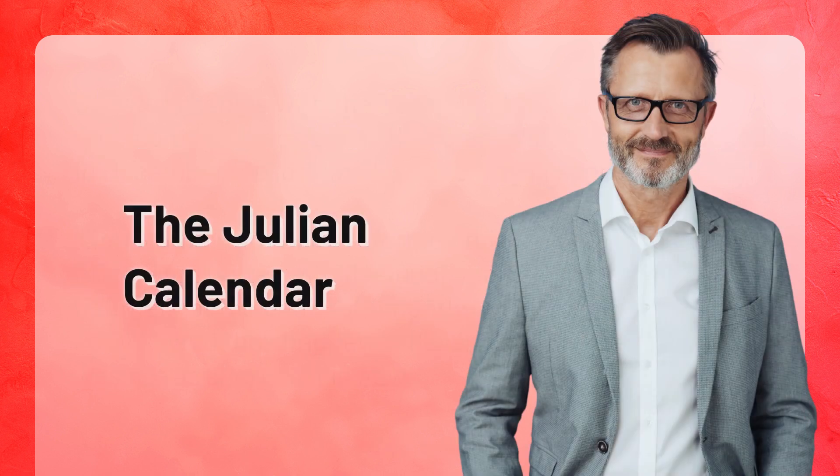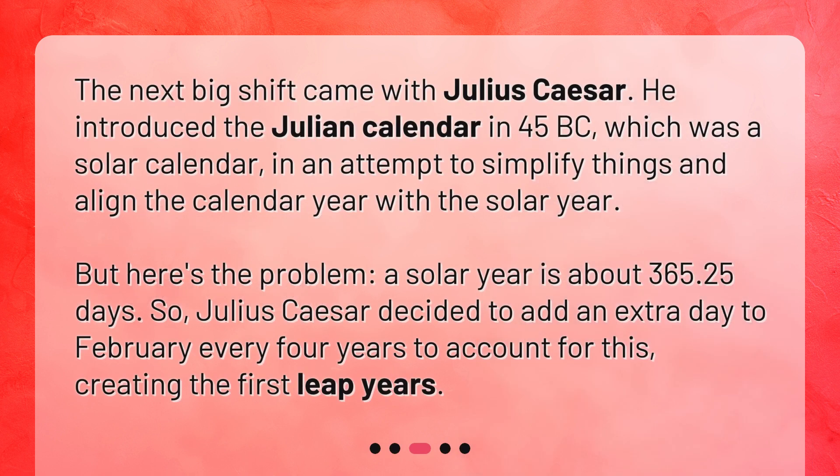The Julian calendar. The next big shift came with Julius Caesar. He introduced the Julian calendar in 45 BC, which was a solar calendar, in an attempt to simplify things and align the calendar year with the solar year. But here's the problem: a solar year is about 365.25 days. So Julius Caesar decided to add an extra day to February every four years to account for this, creating the first leap years.